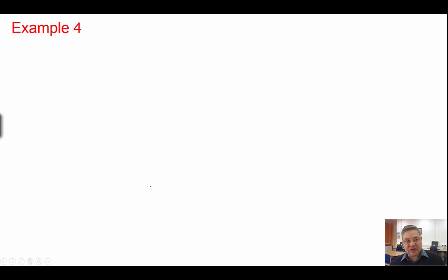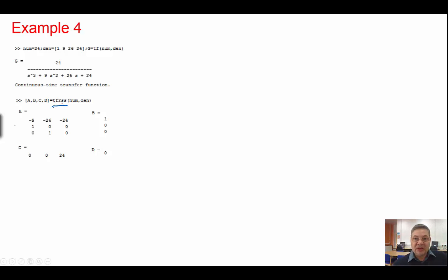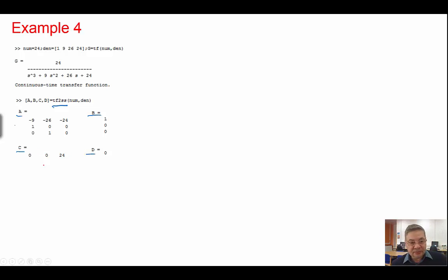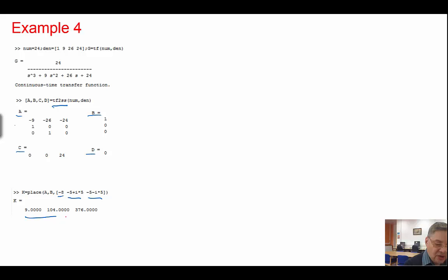We consider another example. Given G, I used the transfer function to state space command and got the representation in controller canonical form — that's what MATLAB always gives. I implement this with feedback and want poles at minus 5, minus 8, minus 5 plus J5, and minus 5 minus J5. This gives me K1, K2, K3.